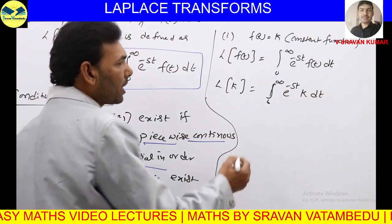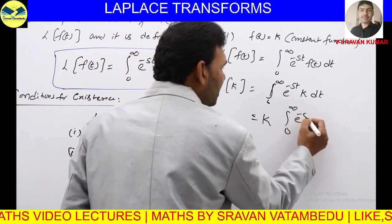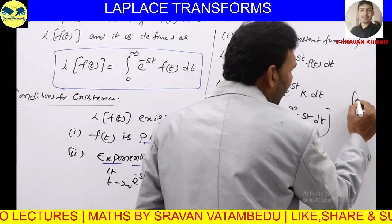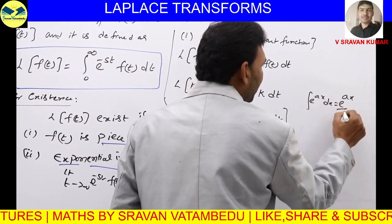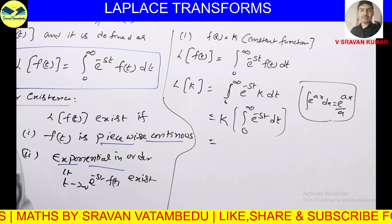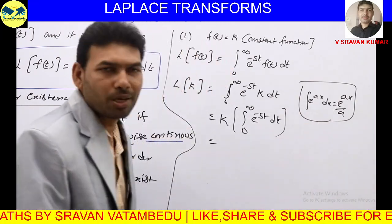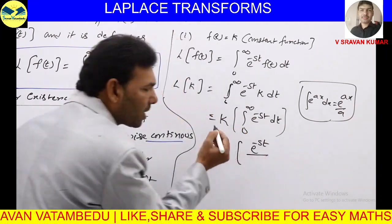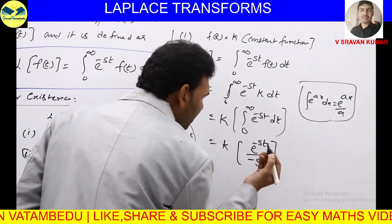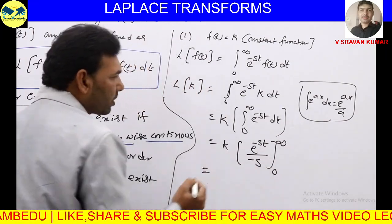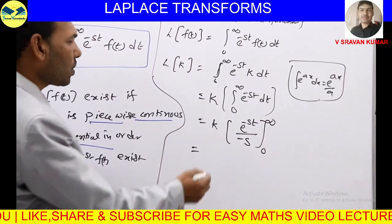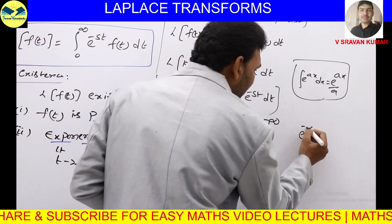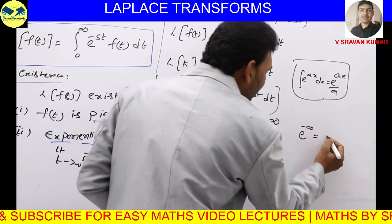Since K is constant, take it outside. You need to integrate e^(−st) with respect to t. We know the formula: integral of e^(ax) dx = e^(ax) / a. Applying that, the integral of e^(−st) dt = e^(−st) / (−s). So you get K · [e^(−st) / (−s)] evaluated from 0 to infinity, which equals −K/S · [e^(−st)] from 0 to infinity.